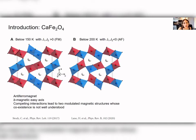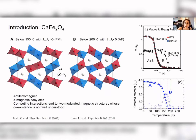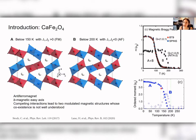Below 150 K, another spin arrangement termed the A-phase has been measured, where the exchange interaction between edge-sharing octahedra goes from antiferromagnetic to ferromagnetic. This structure is also antiferromagnetic but has a double-period modulation along the c-axis. The coexistence between these two magnetic structures is not fully understood — some reports suggest they coexist over a broad temperature range via a first-order phase transition, while others suggest the A-structure is the ground state and B exists only as an excitation near the Néel temperature.